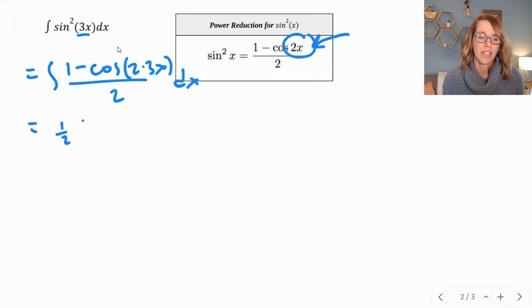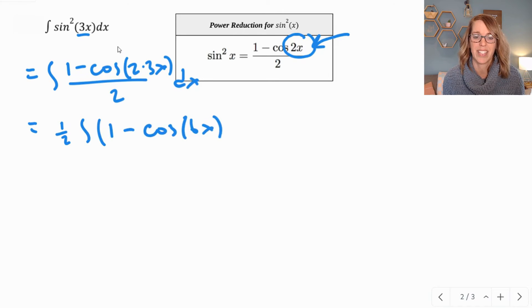I can bring the 1 half out in front, and I get 1 minus cosine 6x dx.